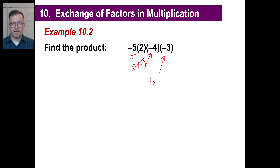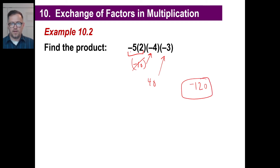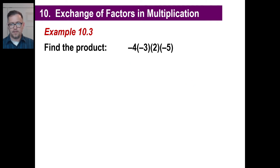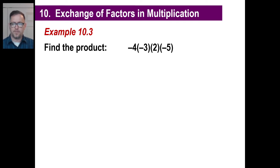40 times negative 3 — well, we know 4 times negative 3 is negative 12, so 40 times negative 3 is negative 120. So we have negative 5, 2, negative 4, negative 3 equals negative 120. Let's go left to right with this one. Go ahead, pause it for a second and do the problem left to right.